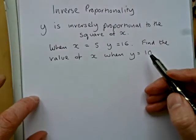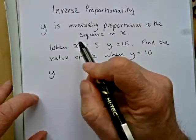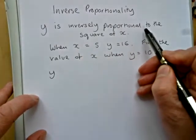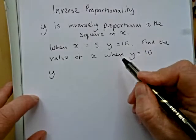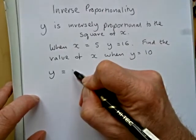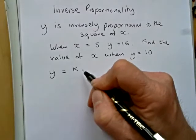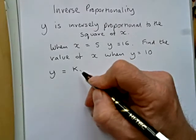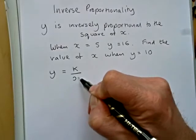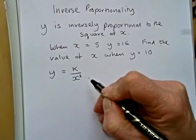So, to do this question, we need to interpret correctly the statement that y is inversely proportional to the square of x. Well, with all proportionality, we have a k to start with, and we have to find that with the information we're given. If it's inversely proportional, then the square of x is written underneath k.